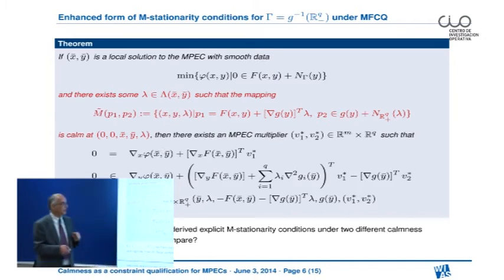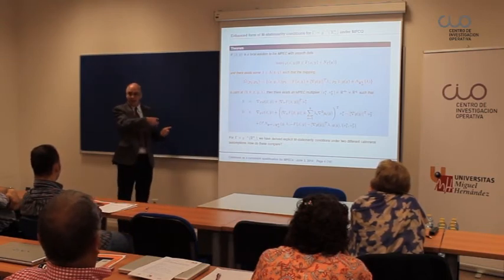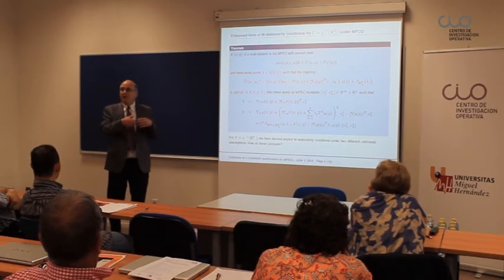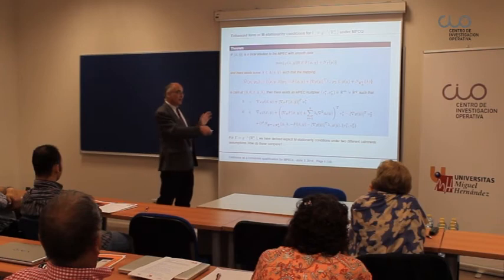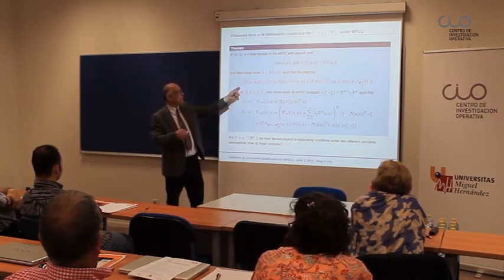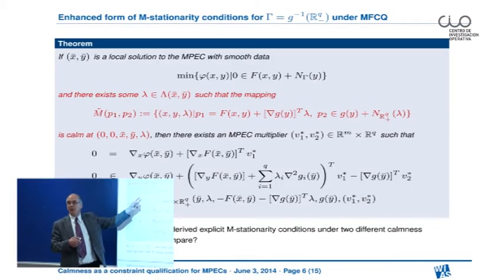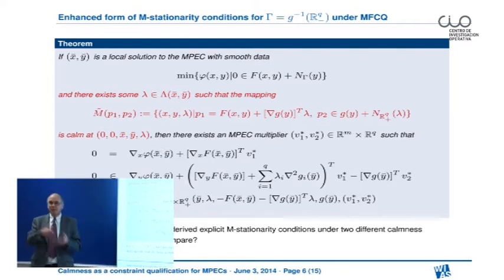It turns out it is exactly the same form of stationarity conditions as we had in the beginning if we would make explicit the co-derivative. So I do not compare the stationarity conditions of the two theorems, but I want to pose the question: what is the difference between the two constraint qualifications? Because both of them lead to the same result, it should be interesting to know whether it is simpler to check one or the other.